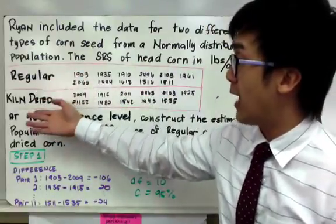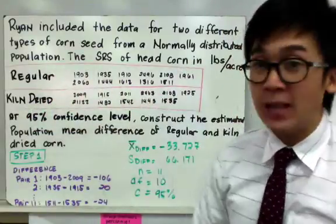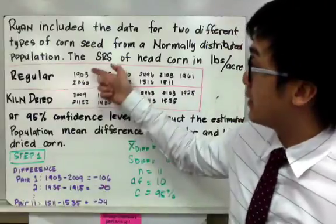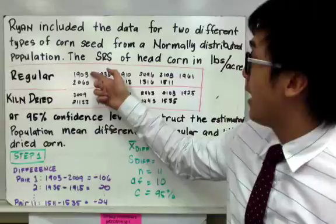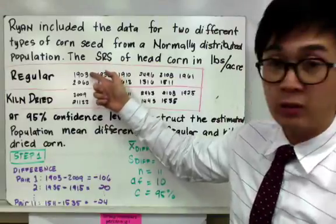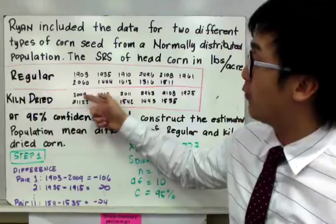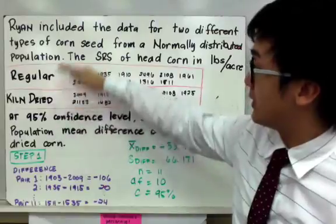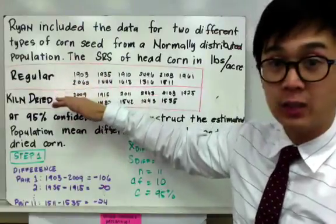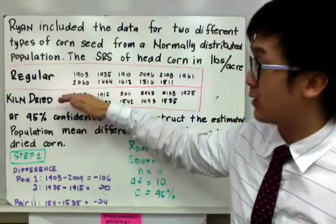Now this is a matched pair design because this 1903 head corn per pound per acre is matched to the kiln dried corn for 2009. So these two sets of values are our two samples and we're going to find its mean difference later on.